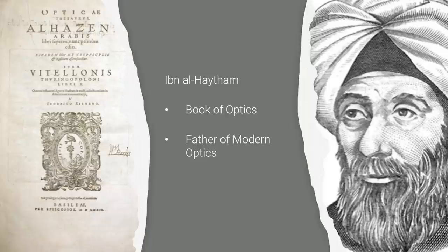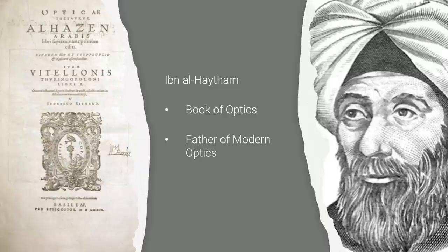For example, before Ibn al-Haytham, great scientists like Euclid of Alexandria thought our eyes have beams that go out and touch objects — that's how we see. Ibn al-Haytham argued against that in Kitab al-Manazir — the Book of Optics. He said he didn't believe our eyes have beams coming out; rather, we see because light comes into our eyes, not the other way around. That basic optical theory is foundational to the future development of microscopy.